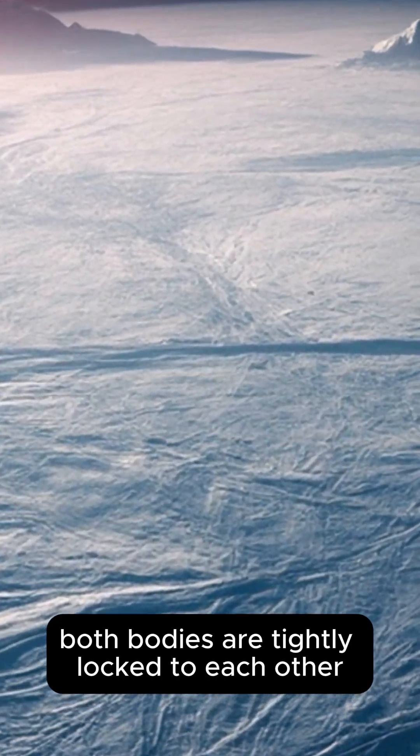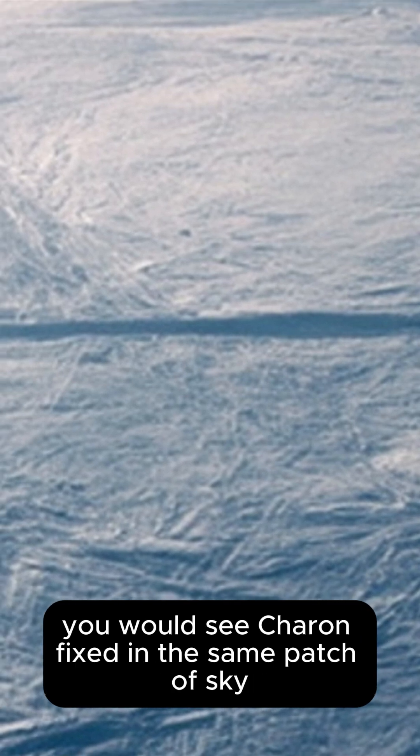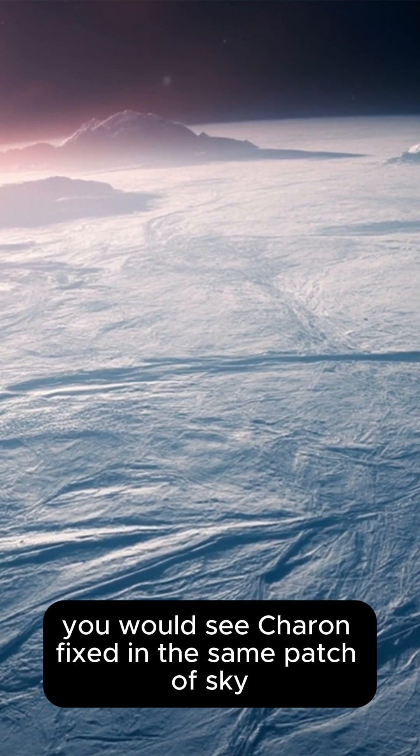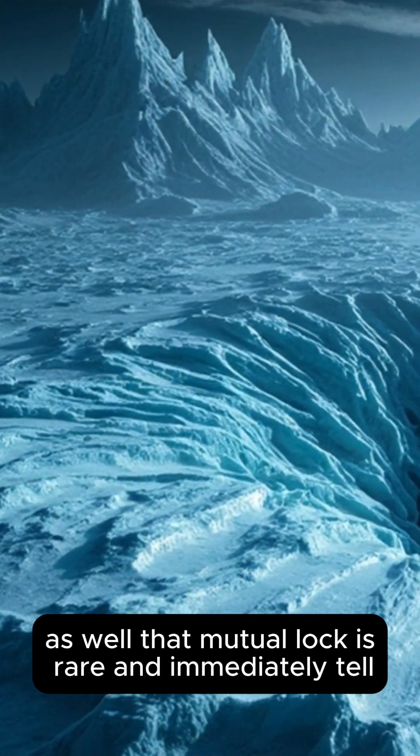Both bodies are tidally locked to each other. If you stood on Pluto beneath Charon's hemisphere, you would see Charon fixed in the same patch of sky, and a viewer on Charon would see Pluto frozen in place as well.